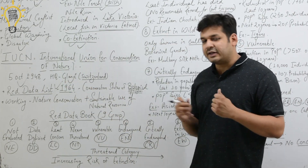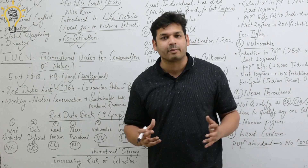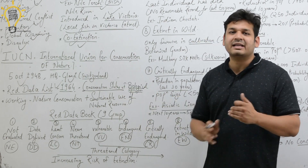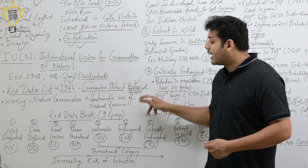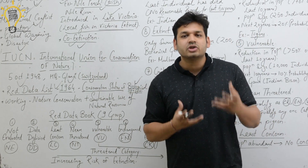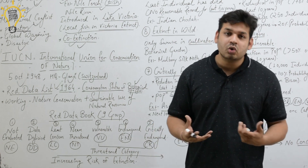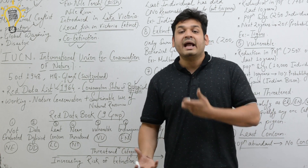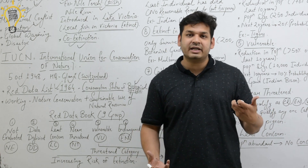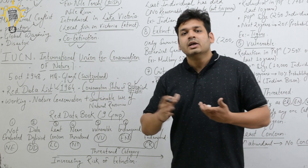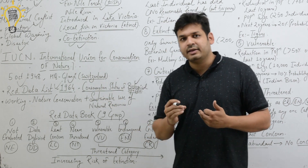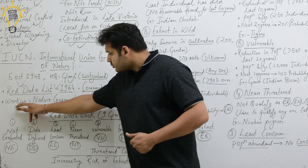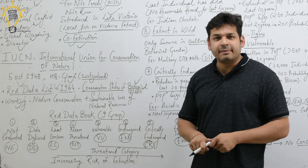The Red Data Book was first published in 1964. It contains the conservation status of biological species — whether plants or animals — telling us if they are extinct, endangered, critically endangered, least concern, and so on. This status is what IUCN provides for all biological species. If we talk about IUCN's working, it works to conserve nature as well as for the sustainable use of natural resources.